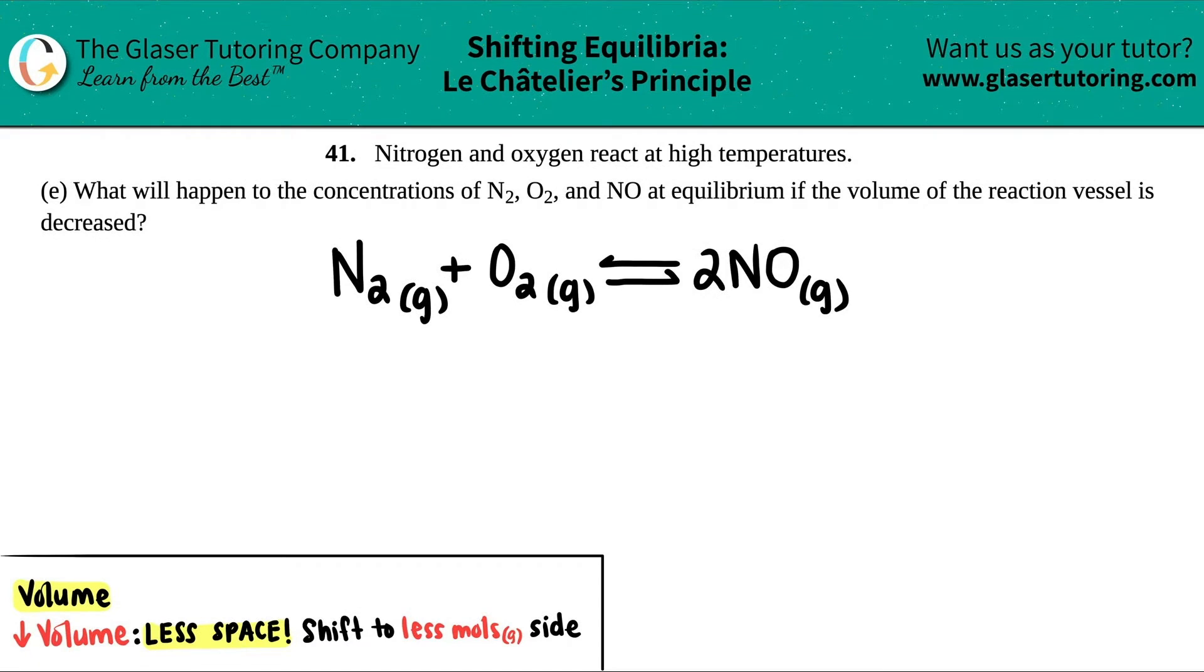Number 41, nitrogen and oxygen react at high temperatures, and then we have letter E. What will happen to the concentrations of N2, O2 and NO at equilibrium if the volume of the reaction vessel is decreased?